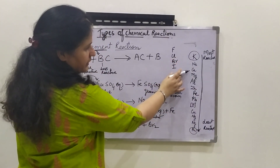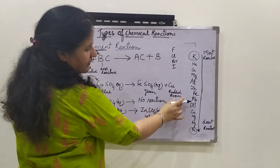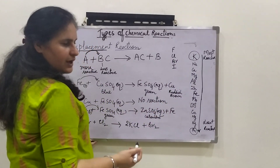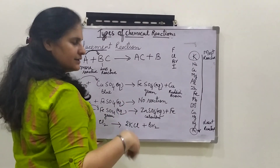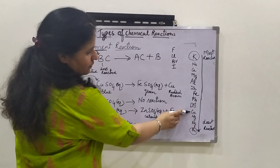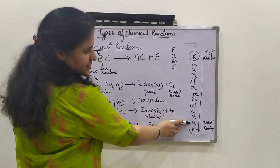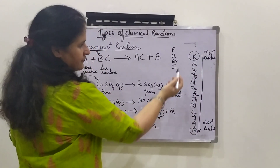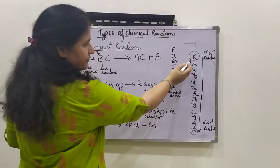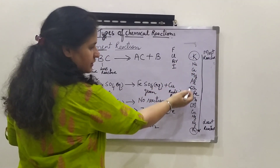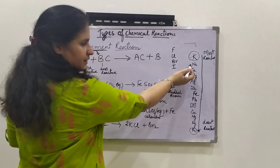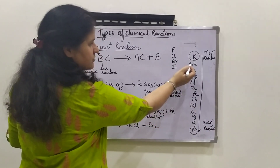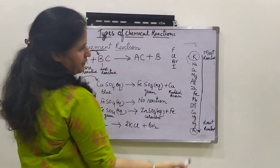So here: potassium, sodium, calcium, magnesium, aluminium, zinc, iron, lead, hydrogen. Hydrogen plays a dual role — it at times behaves as a metal and also as a non-metal. Then copper, mercury, silver, and gold. So potassium is the most reactive and gold is the least reactive. A metal higher in this series can take the place of all metals below it from a compound. For example, sodium can take the place of all these metals below it, but cannot take the place of potassium from its compound.